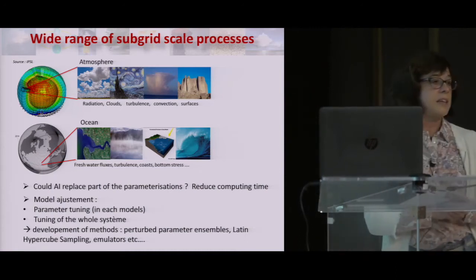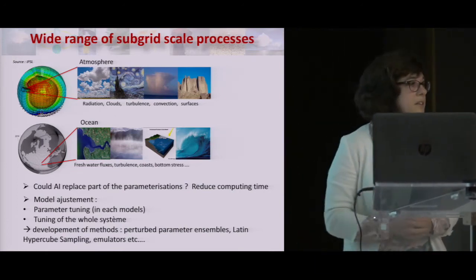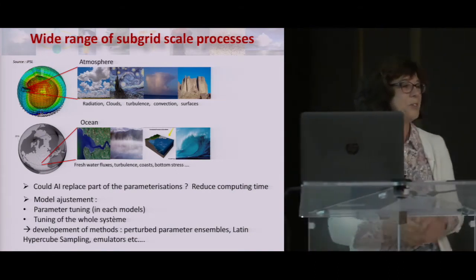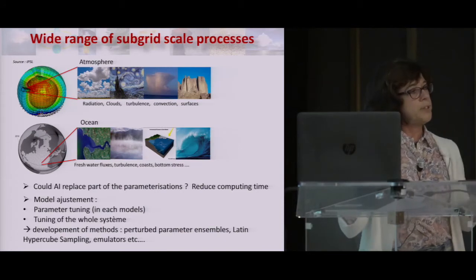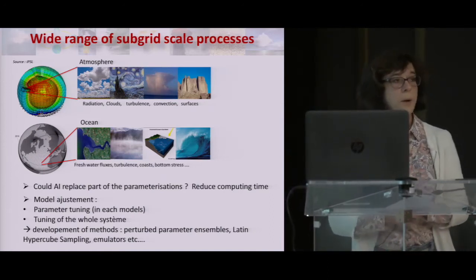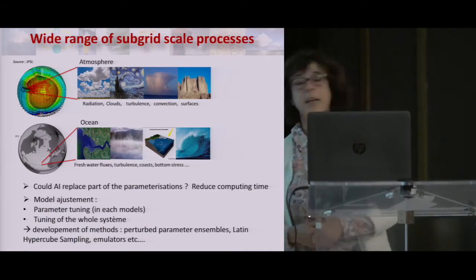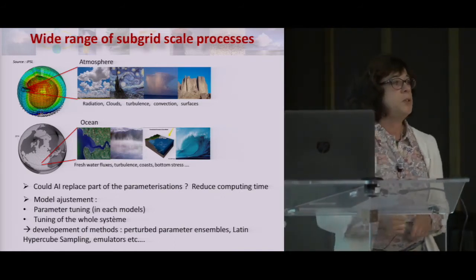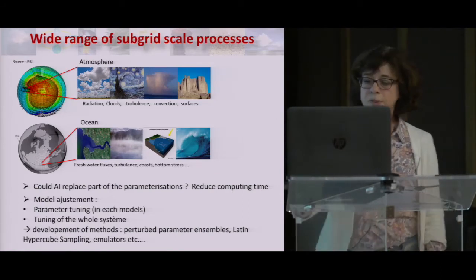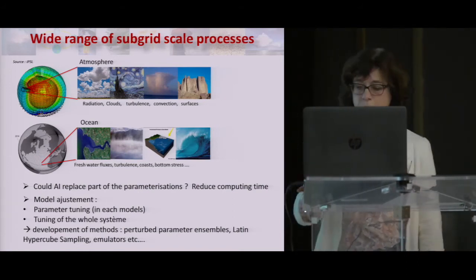Because we have all these parameters, we have to adjust the models. We have different ways to do this, of course, for each model. The constraint when you set up a new parameterization and when you put the whole Earth system together can be quite different. More and more we are using new methods with better parameter ensembles — Latin hypercube sampling, emulators, and so on. Part of this has been used in the tuning of the last versions of both the IPSL and CNRM models.